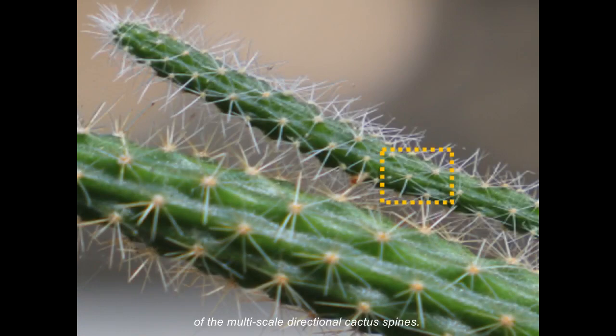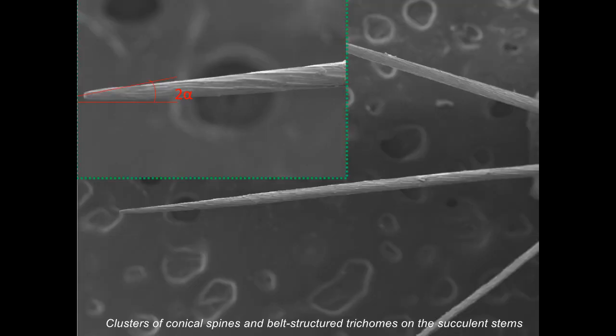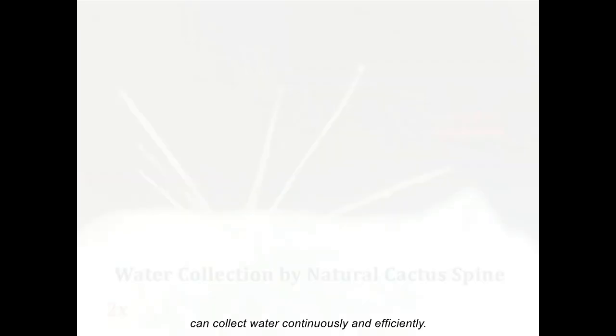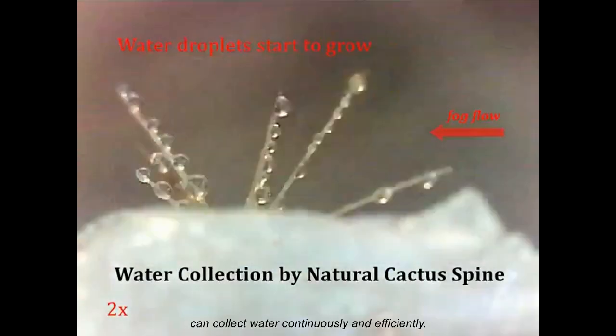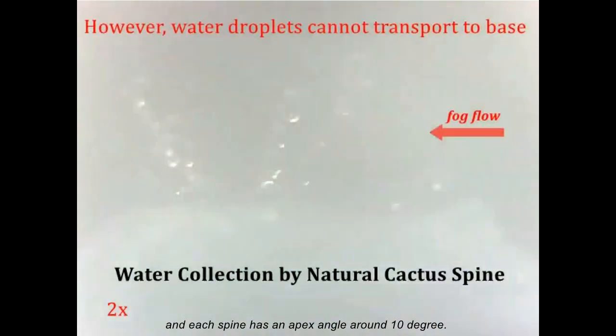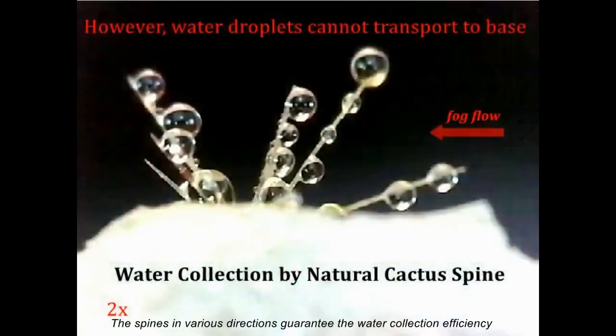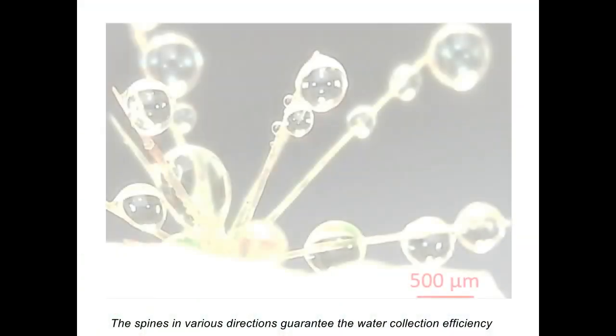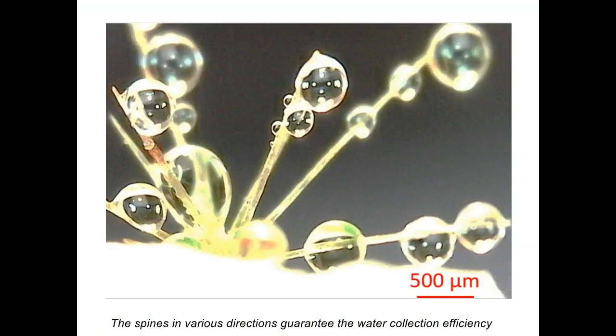The multi-scale directional cactus spines, clusters of conical spines and belt-structured trichomes on the succulent stems can collect water continuously and efficiently. Clusters of spines are distributed evenly on the stem, and each spine has an apex angle around 10 degrees. The spines in various directions guarantee the water collection efficiency from different directions of fog flows.